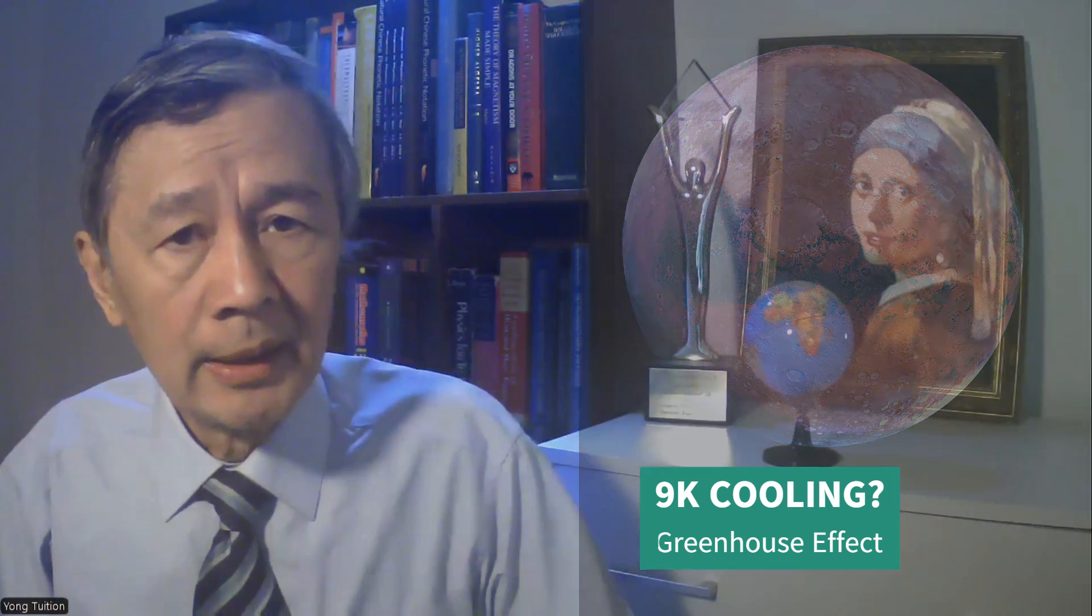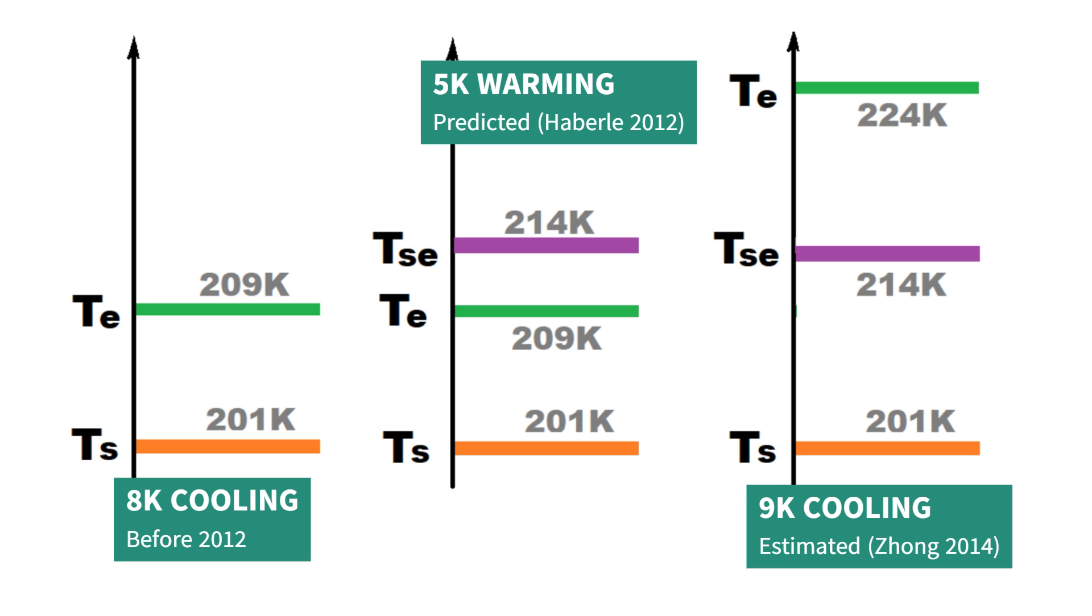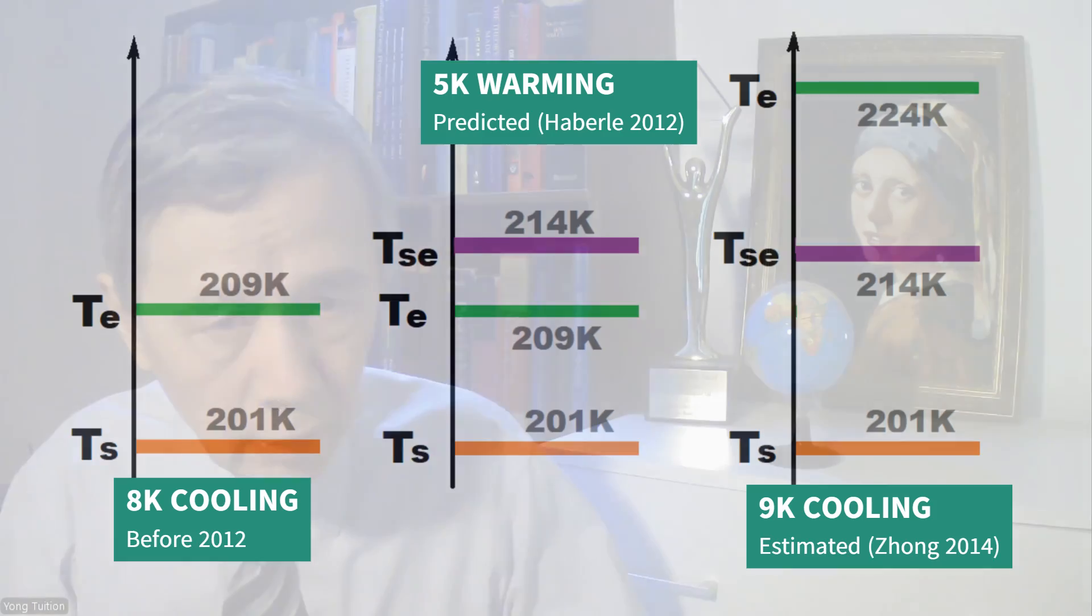Got it? In summary, the Martian surface temperature would be 223 Kelvin without any greenhouse gases, neither 209 Kelvin nor 219 Kelvin. The newly defined GMST 214 Kelvin proposed by Haberle in 2012 is still 9 Kelvin lower than the emission temperature 223 Kelvin. As a result, the greenhouse effect on Mars, if there's any, makes the surface of Mars 9 Kelvin colder.